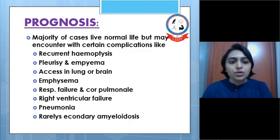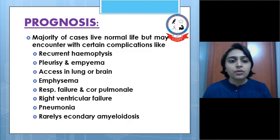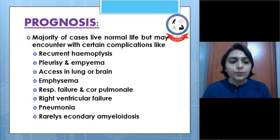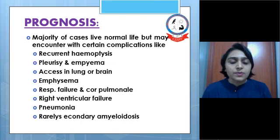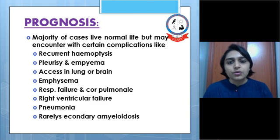Prognosis: the majority of cases live a normal life but may encounter certain complications such as recurrent hemoptysis, pleurisy and empyema, abscess in the lung or brain, emphysema, respiratory failure and cor pulmonale, right ventricular failure, pneumonia, and rarely amyloidosis.